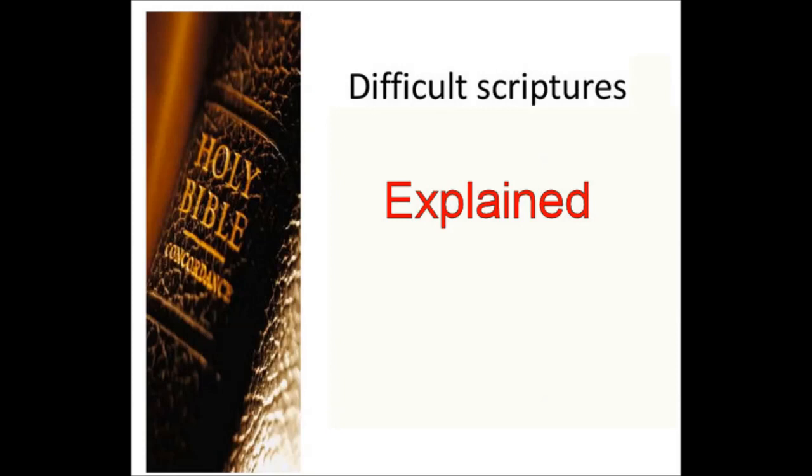In James chapter 4, verse 4, we have the following. Here is another difficult scripture. You adulterers and adulteresses, know you not that the friendship of the world is enmity with God? Whosoever, therefore, will be a friend of the world is the enemy of God.